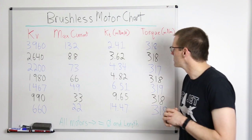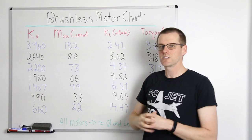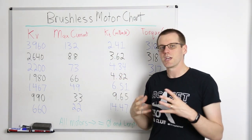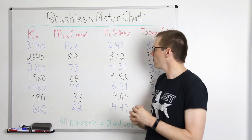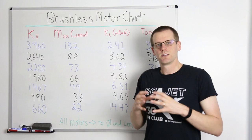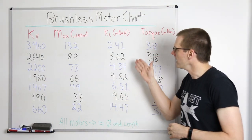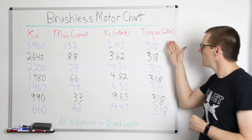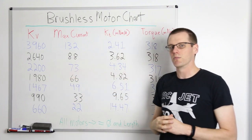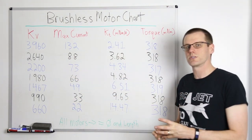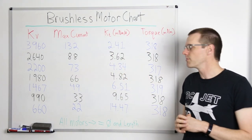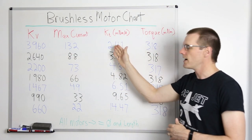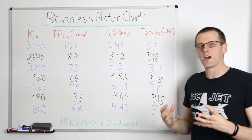The last step is multiplying the KT value by the maximum current to get the torque specification. As you decrease the maximum current for a lower KV motor, you increase the KT value. However, it would not be correct to say you get higher potential torque output from lower KV motors. The torque potential for all these motors from the spec sheet is around 318 — the exact same value when you multiply current by KT.